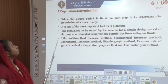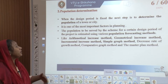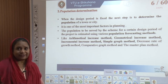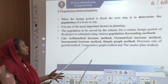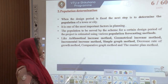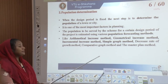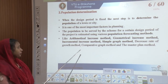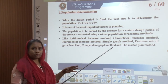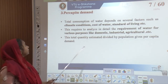The next factor is population determination. When the design period is fixed to 20 to 40 years, we have to determine the population of the town or city. It is one of the most important factors in planning. The population to be served is estimated by various forecasting methods like the arithmetical increase method, geometrical increase method, incremental increase method, simple graph method, decrease rate of growth method, comparative graph method, and the master plan method.